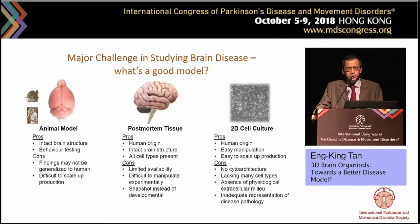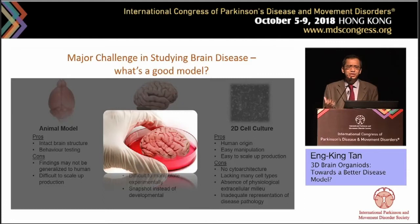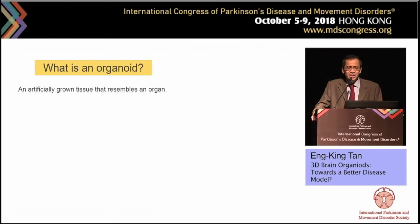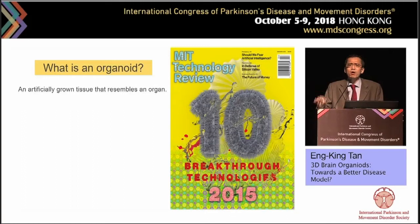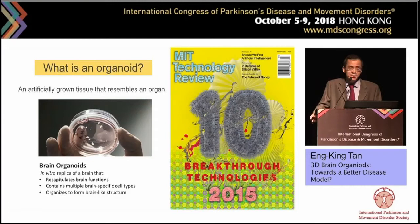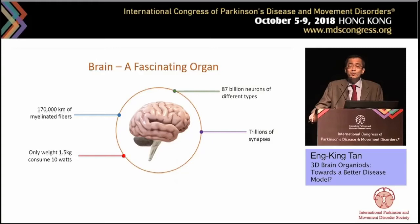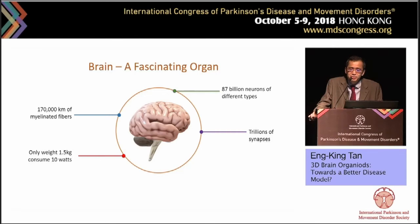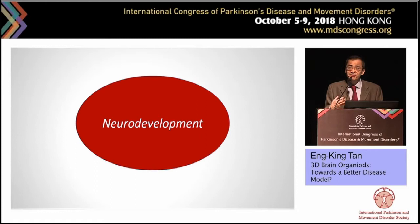In this context, I'm going to share the potential role of a three-dimensional brain organoid in a dish — can it solve some of these problems? An organoid, in layman's terms, is an artificially grown tissue that resembles an organ. MIT Tech Review highlighted organoid technology as one of the top ten breakthroughs currently. The consensus definition of a brain organoid is that it is an in vitro replica of a brain that recapitulates brain functions, contains multiple brain-specific cell types, and organizes itself to form a brain-like structure.